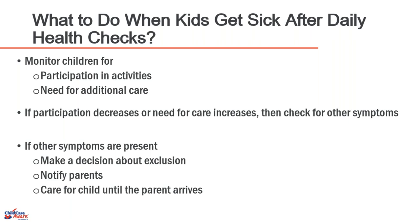For younger children, look for them to be less active, withdrawn, clingy, or not participating with others. If symptoms are developing while they're in your care, notify the parent or guardian right away. You should have policy in place for this. Also take a moment to consider all the conditions and symptoms covering severe illnesses requiring 9-1-1, as covered earlier. What we're talking about here are things that might develop and aren't that urgent or acute but would still require care outside of your program.